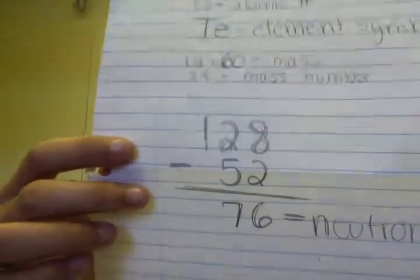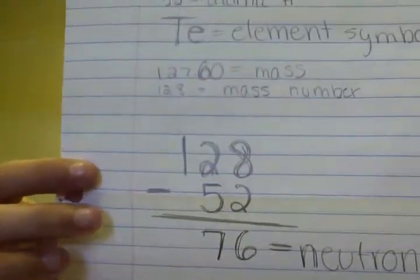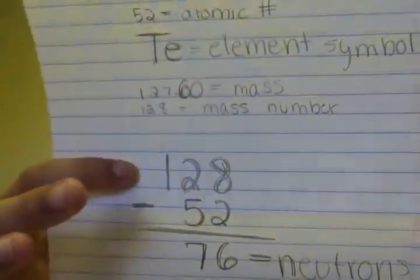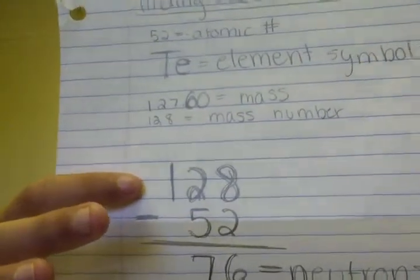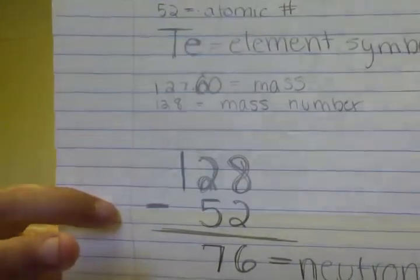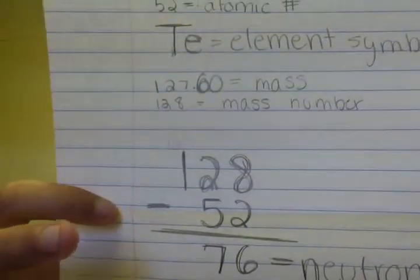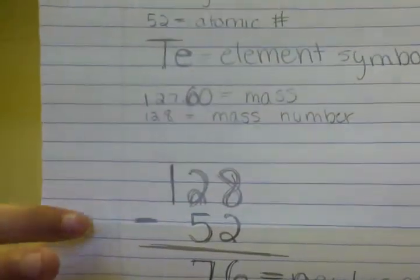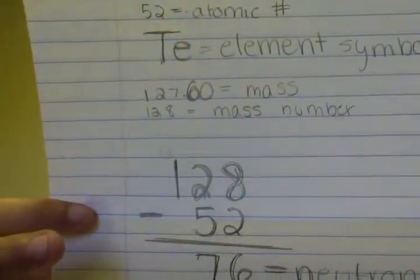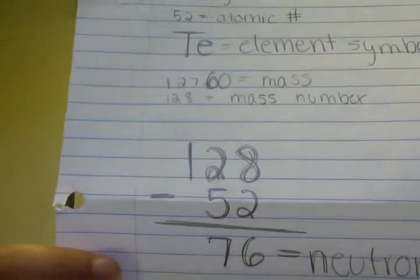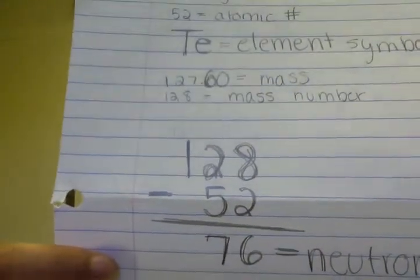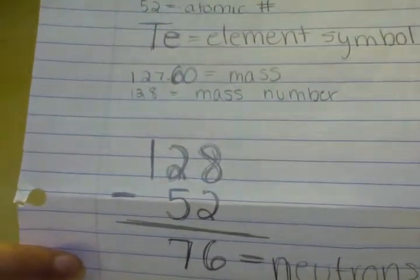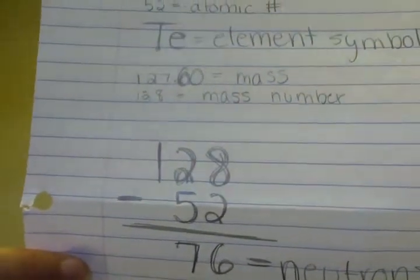To find however many neutrons you have, take the mass number, which is 128, and subtract it by the atomic number, which is 52. And when you subtract those, you get 76, which is how many neutrons are in the atom.